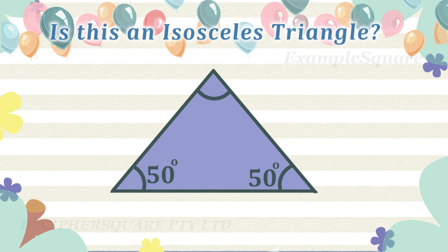Is this an isosceles triangle? Yes, this is an isosceles triangle, as the two interior angles shown are equal, and so the two sides opposite the two equal angles are also equal.